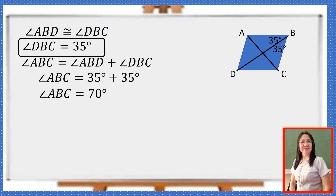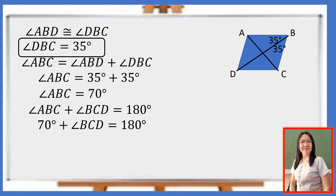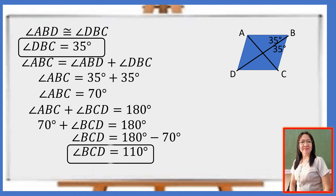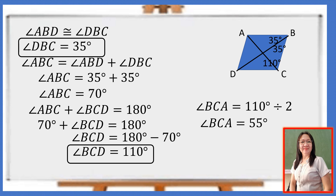Angle ABC and angle BCD are consecutive angles, so their sum is supplementary, equaling 180 degrees. Therefore, angle BCD equals 180 minus 70 degrees, which is 110 degrees. Since the diagonal bisects angle BCD, angle BCA is one half the measure of angle BCD. So angle BCA equals 110 divided by 2, which is 55 degrees.